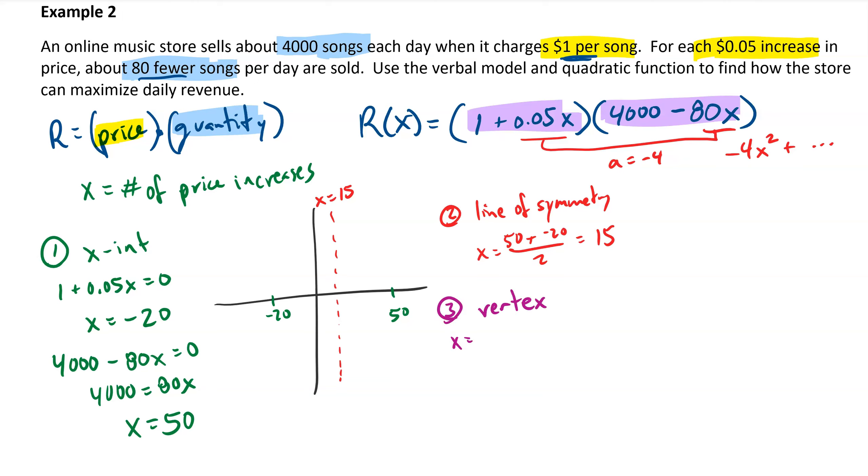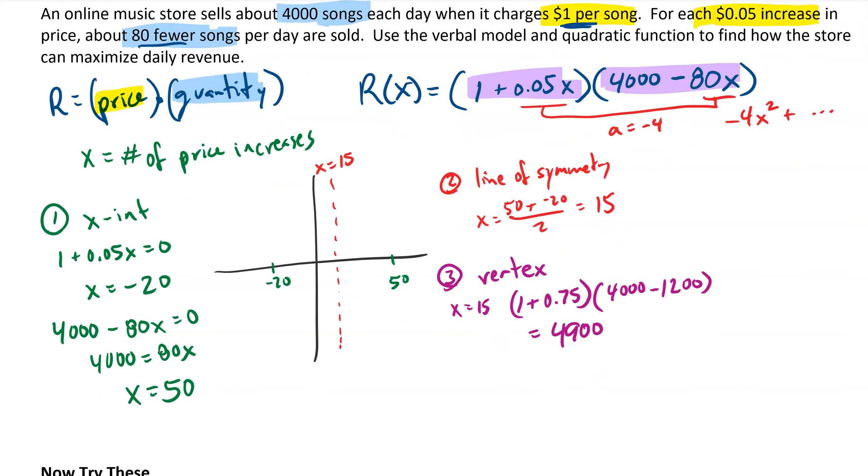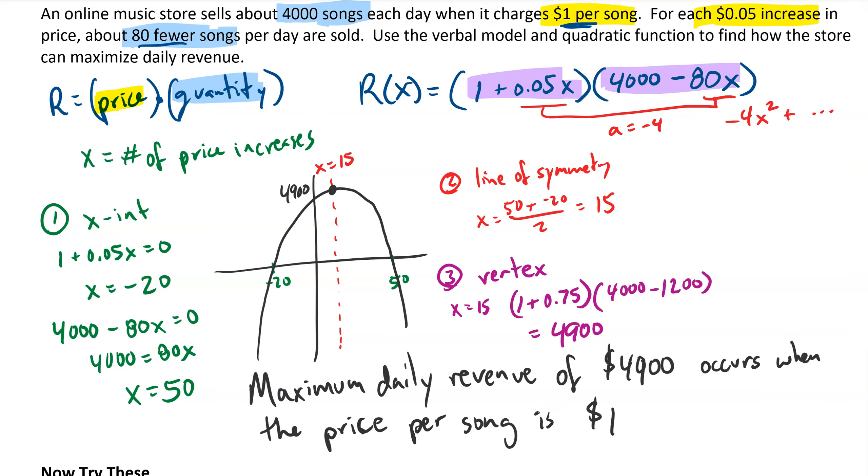My last step is to find the vertex. If I plug x equals 15 into the function, I get 1 plus, well, 15 times 5 is 75, so 1 plus 75 cents. And on the other hand, 15 times 80 is 1,200, so 4,000 minus 1,200. If we multiply those two together, we get a value of 4,900. So maximum revenue is $4,900, and it happens when we increase the price 15 times. Maximum daily revenue of $4,900 occurs when the price per song is $1.75.